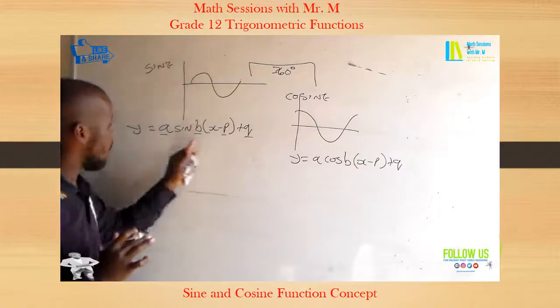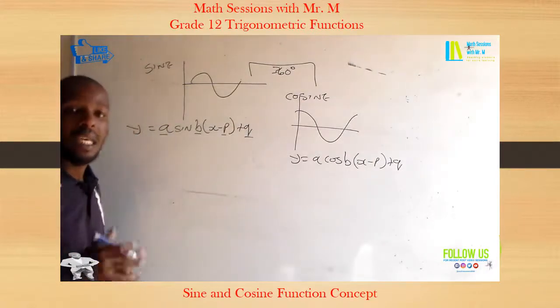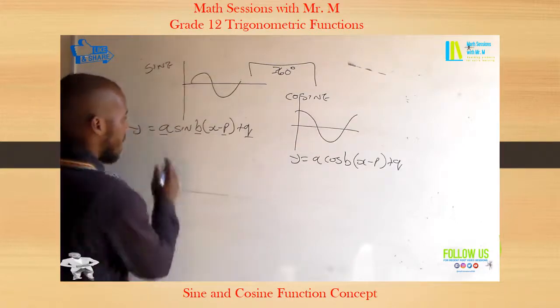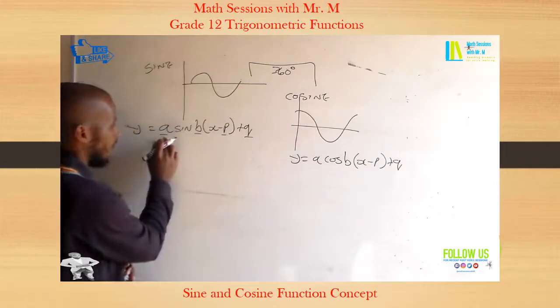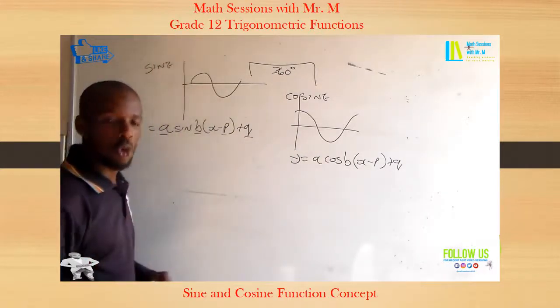So you must understand what is happening there before you can be able to plot out or identify what is happening in your given graph when it comes to exams. Now at A, this point right here, any number that is there is called the amplitude of the graph.